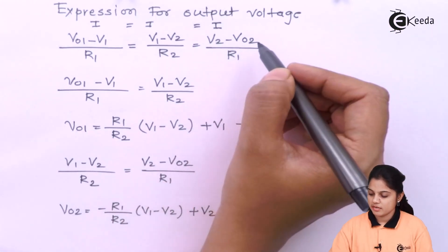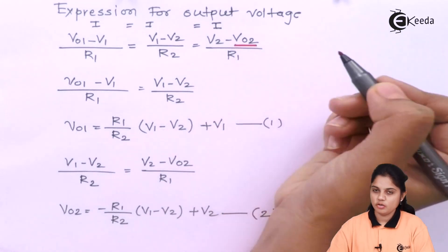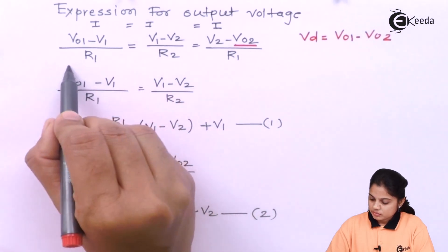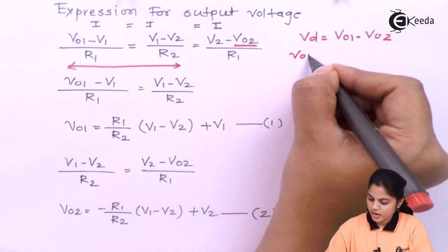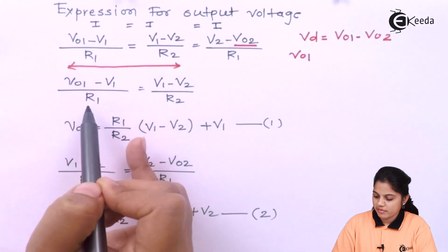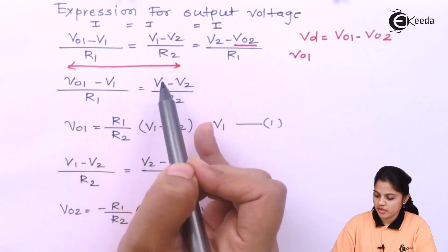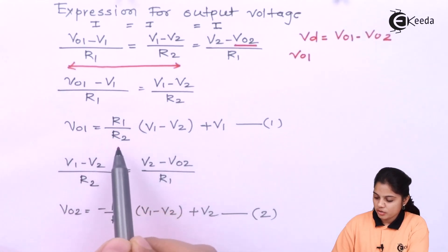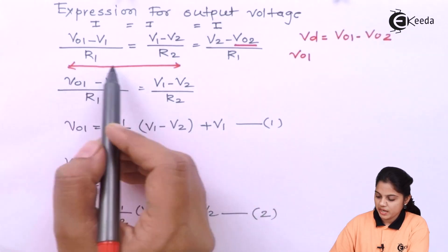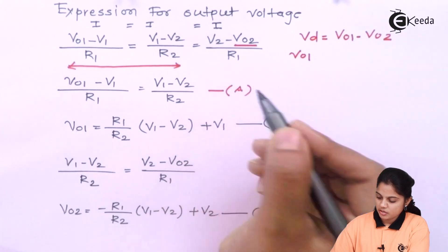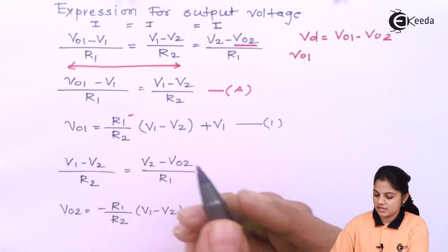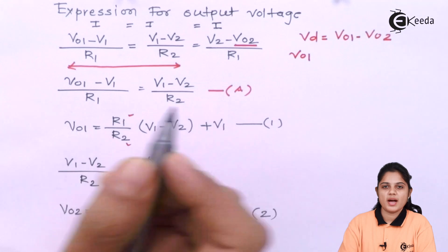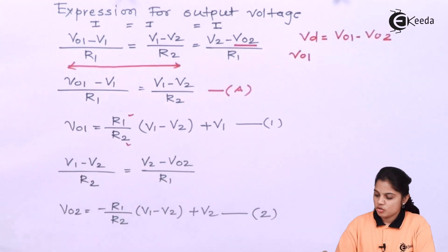Now I want to find the value of V01. I equate the first two terms: (V01 − V1)/R1 = (V1 − V2)/R2. Simplifying, V01 equals R1/R2 times (V1 − V2) plus V1. Rearranging, this gives Equation 1, where R1 is the feedback resistance and R2 is the load resistance, and V1 and V2 are the different input voltages.